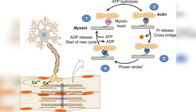During muscle contraction, the myosin filaments slide past the actin filaments, causing the sarcomere to shorten. This sliding action is facilitated by the interaction between actin and myosin, which requires the presence of calcium ions. Calcium ions play a crucial role in muscle contraction by binding to the protein complex troponin-tropomyosin, which regulates the interaction between actin and myosin.